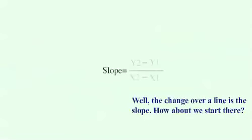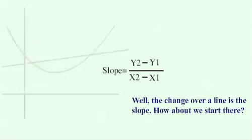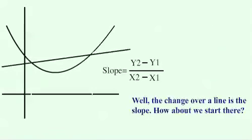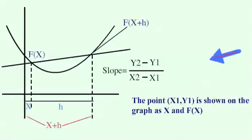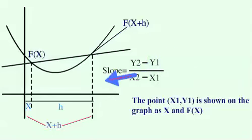The equation for the slope of a line is the difference between two points on that line. The point x1, y1 is shown on the graph as x and f of x.